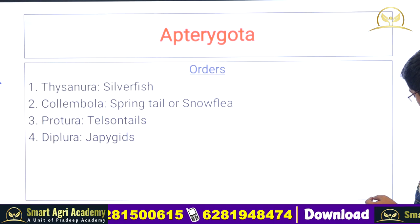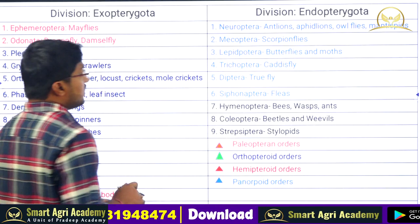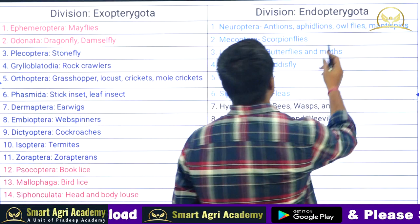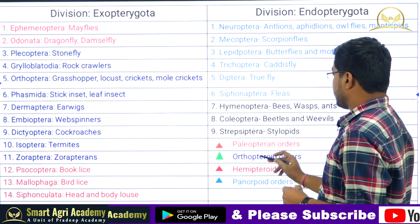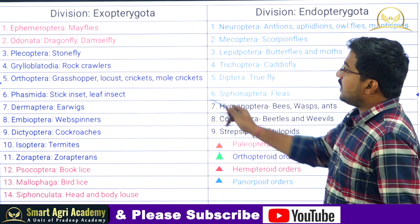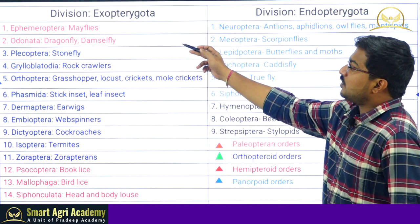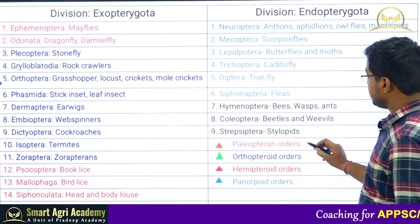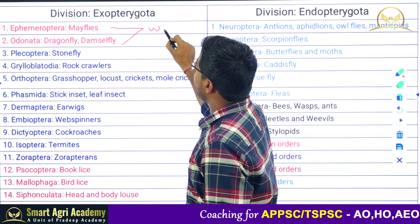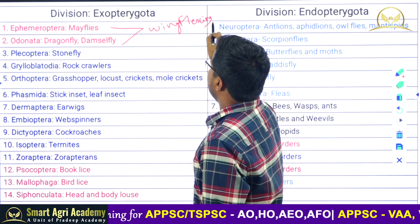Subclass Pterygota is divided into two divisions: Exopterygota and Endopterygota. Among all the orders, there are four categories. Palaeopteran orders, marked in red, include Ephemeroptera (examples: mayflies) and Odonata (examples: dragonflies and damselflies). The characteristic feature of both Palaeopteran orders is that they lack the wing flexing mechanism. We will discuss minor important points of each order separately in coming slides.